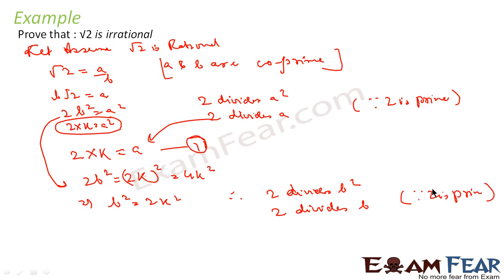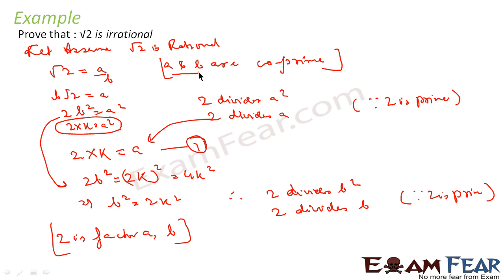So what we have seen is that 2 divides A and 2 divides B. That means 2 is a common factor of both A and B. But we had assumed that A and B are co-prime — meaning they share no common factor. So our assumption is incorrect. That means our assumption that √2 is rational is also incorrect. Therefore, we have proved that √2 is irrational.